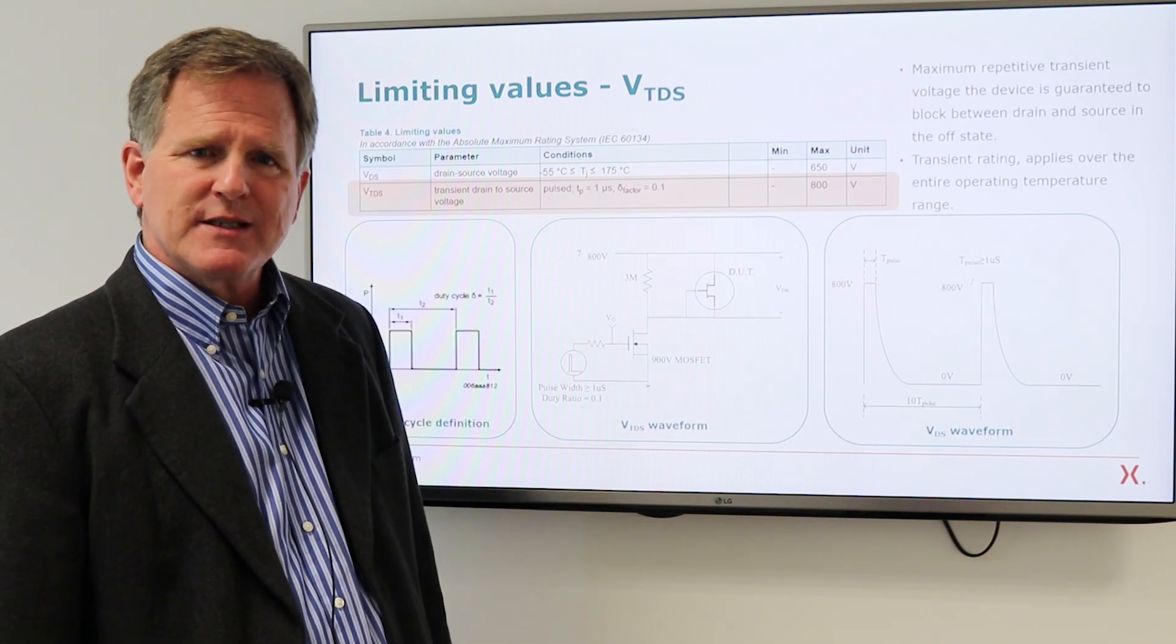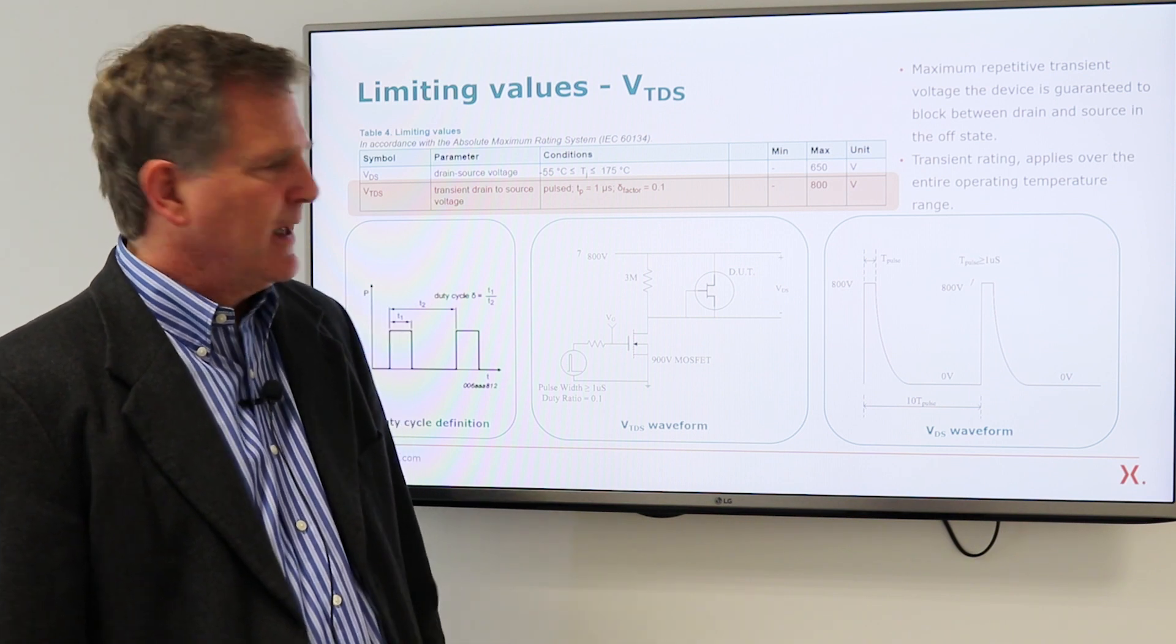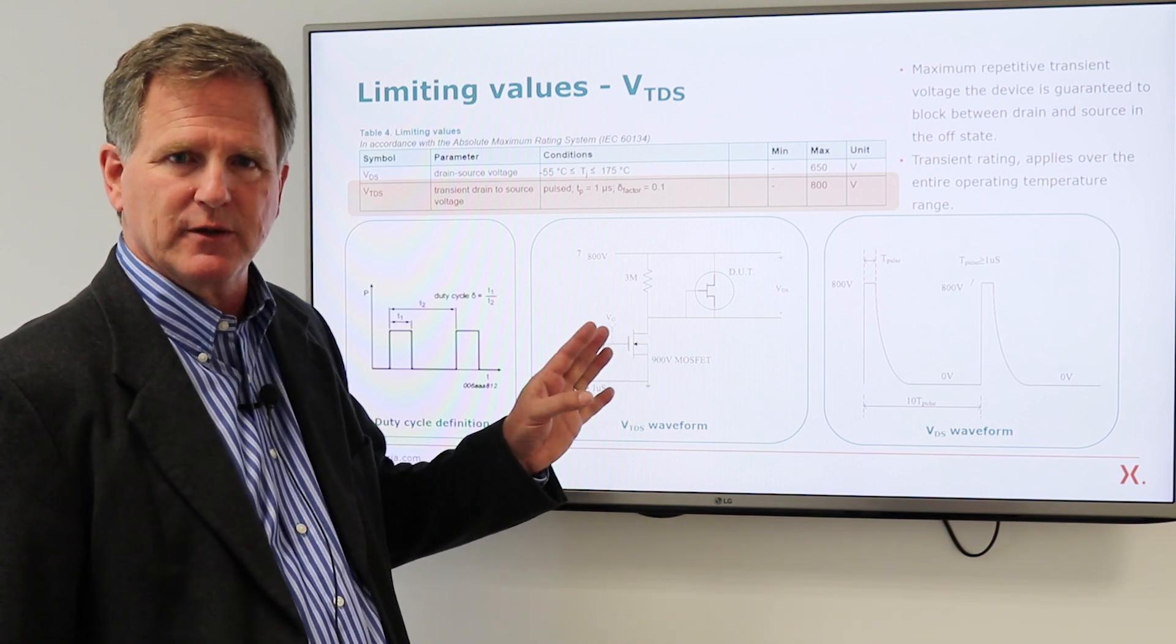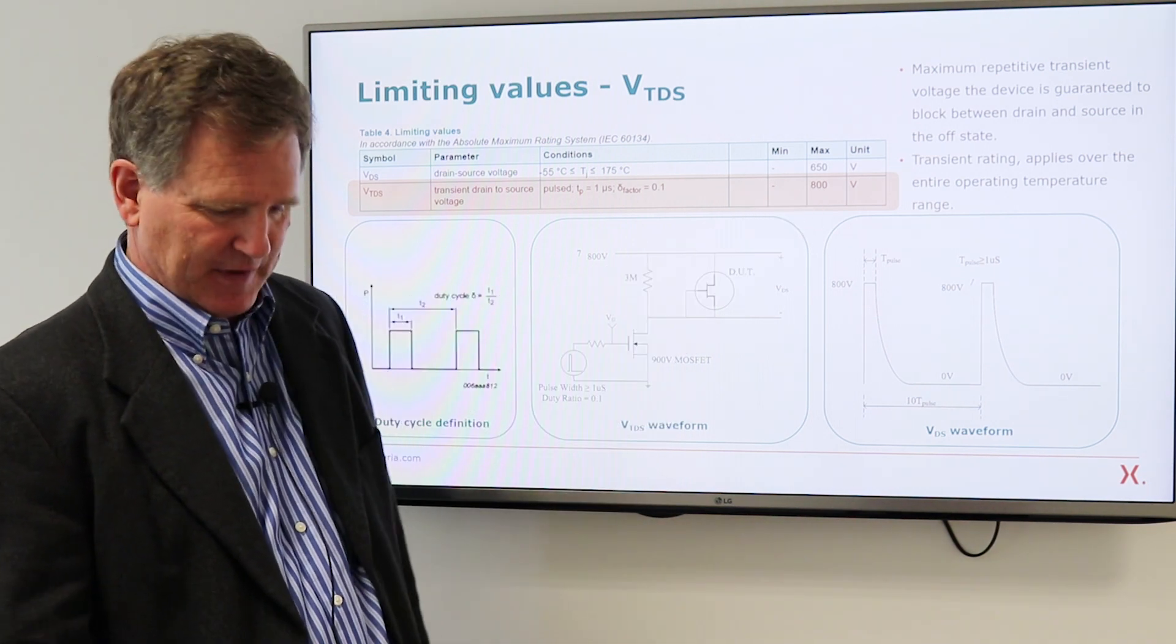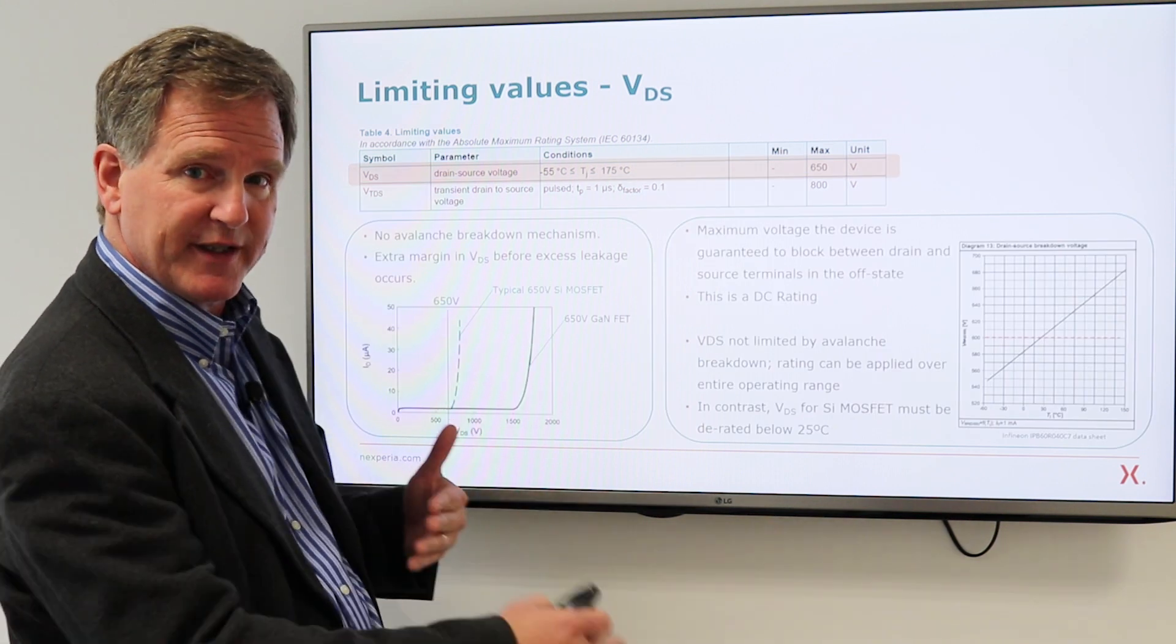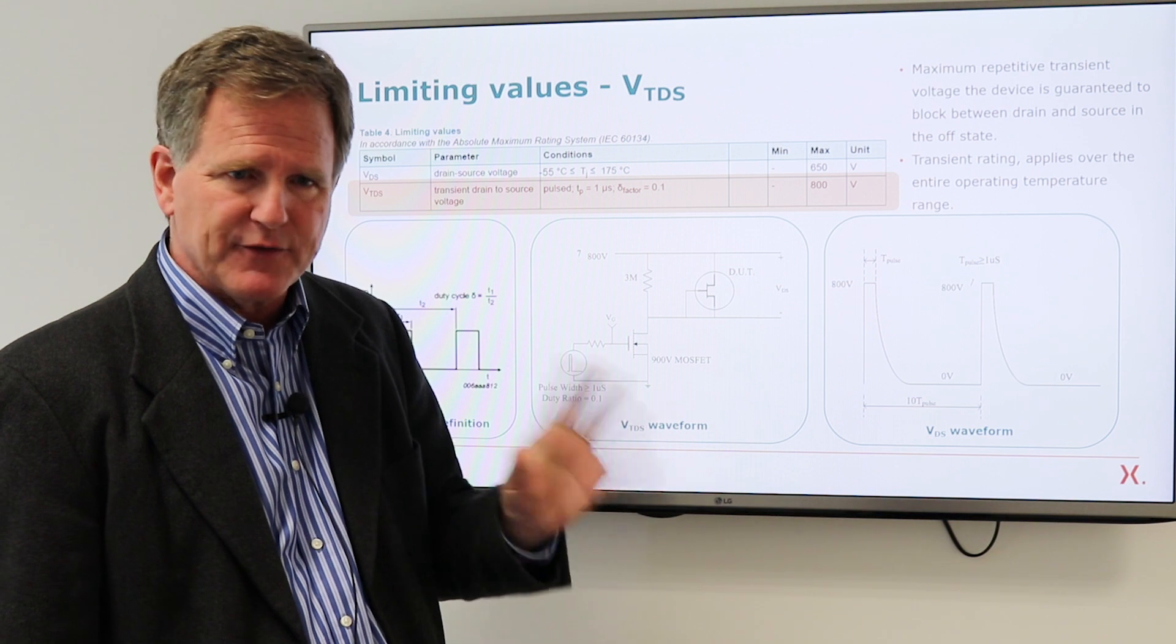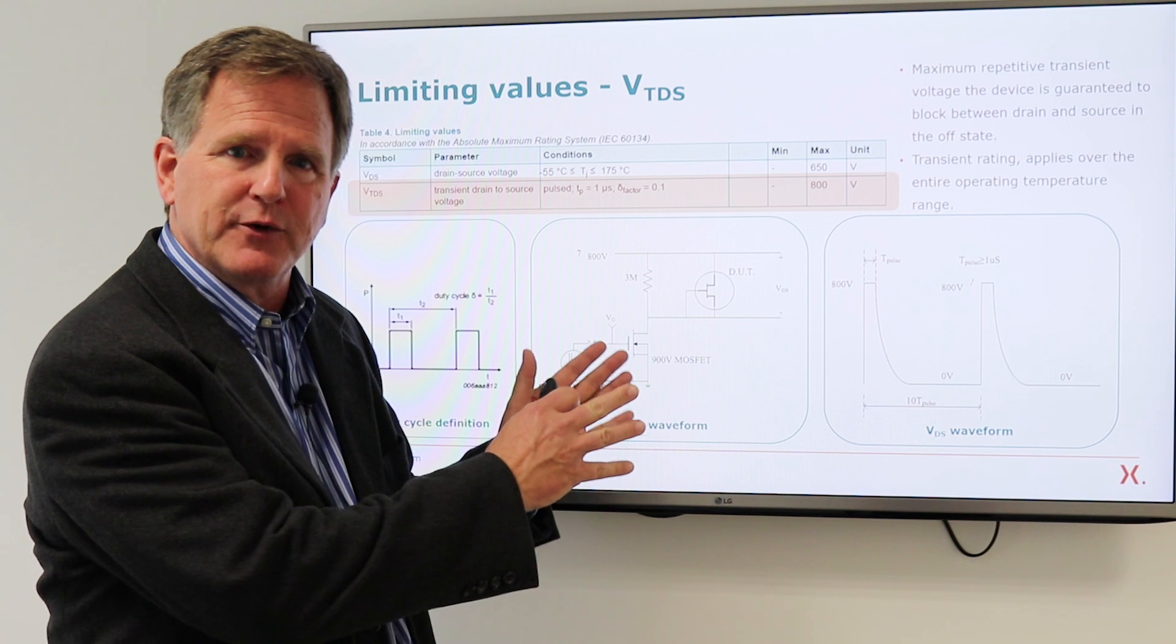In terms of a transient rating, this is a new parameter, the transient drain to source voltage. And we specify this as one microsecond or less, 10% duty cycle or less, repetitive transient over voltage of 800 volts. If we go back, you can see that here at 800 volts, we're really not in danger of breaking the device. And so we will permit repetitive transients. And the idea here is if you have some resonance in your circuit that gives you an overshoot, if it's within these boundaries,